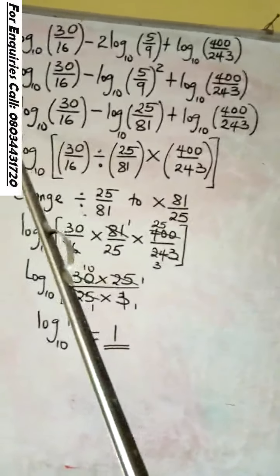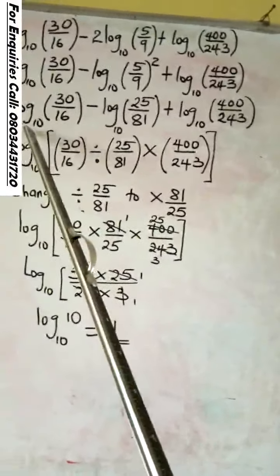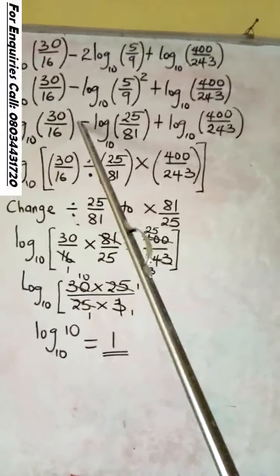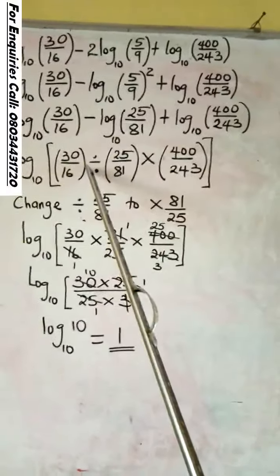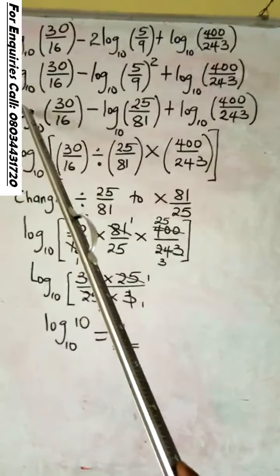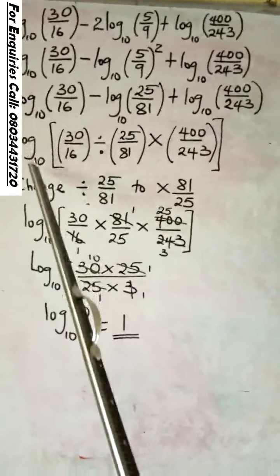Now, since everything there is on the same base, you pick one. It will now be 30 over 16. The minus there will turn to division. The addition here will turn to multiplication. You can see we have only one log base 10. We are not using the 3 logs there. Only one base 10.